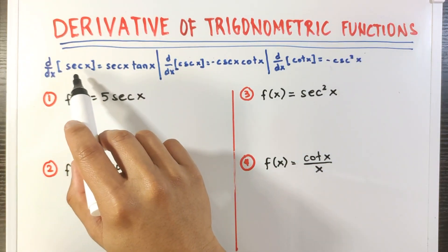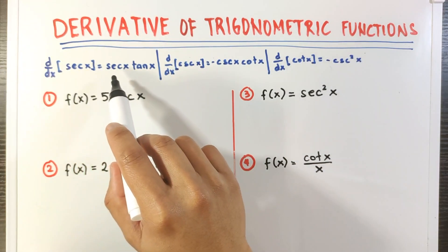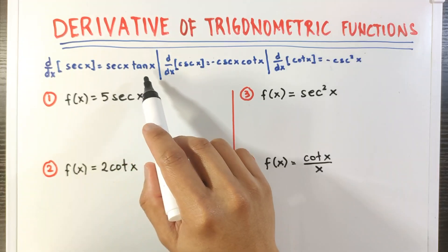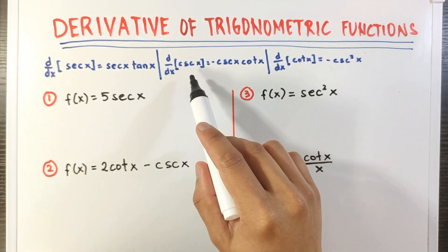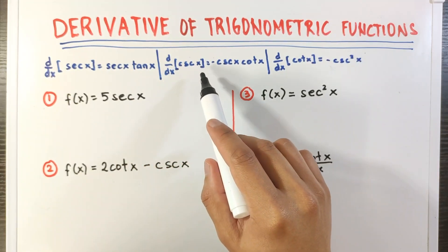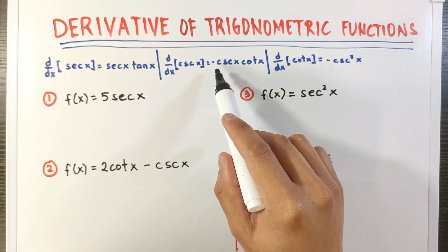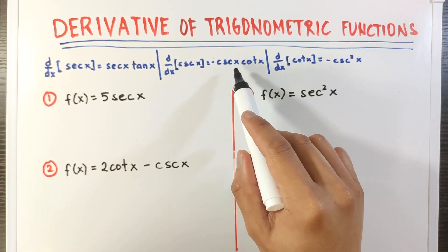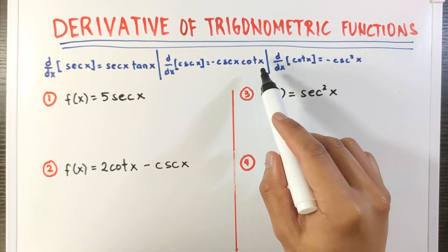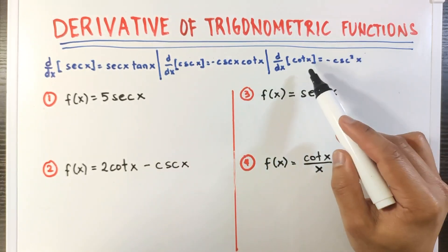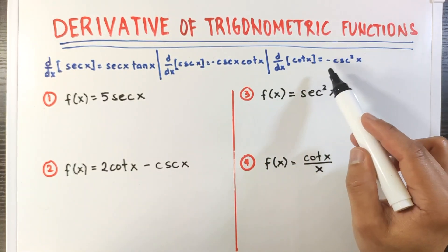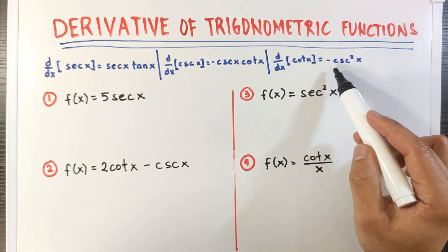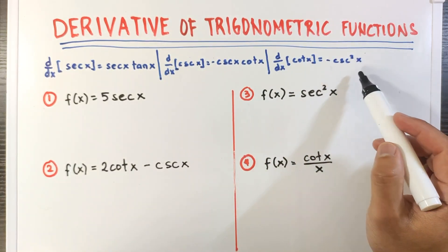The derivative of secant x is secant x tangent x. The derivative of cosecant x is negative cosecant x cotangent x. And the derivative of cotangent x is negative cosecant squared x.